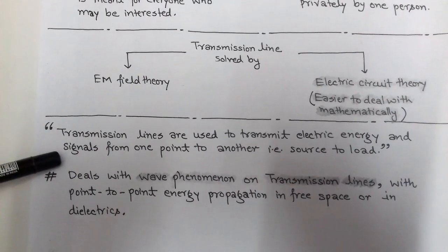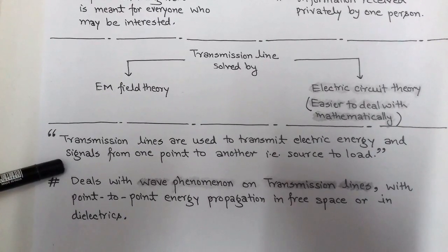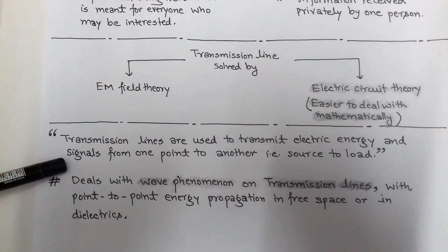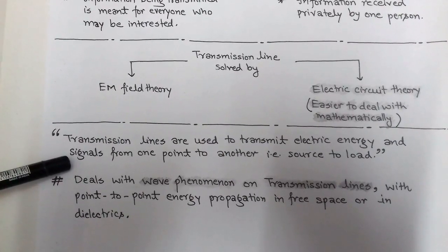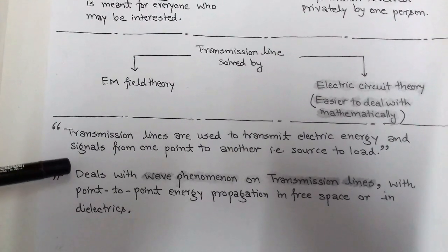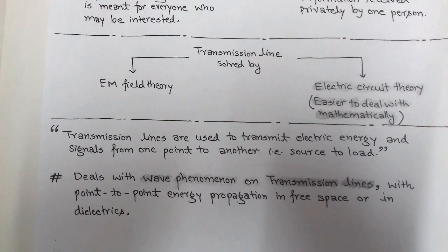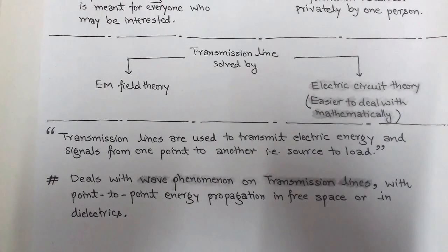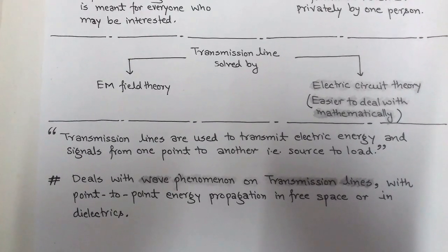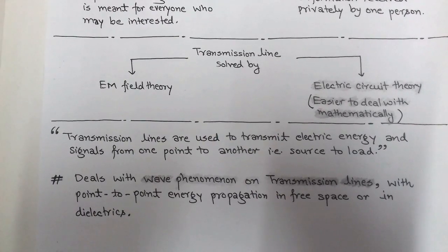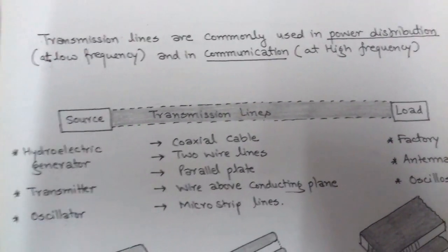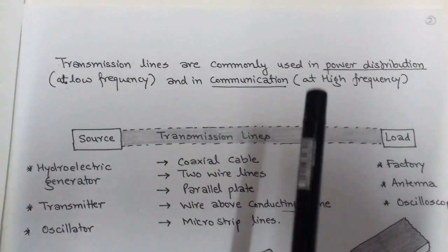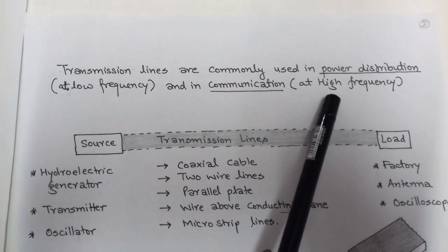Transmission lines are used to transmit electric energy and signals — that is, voltage or current — from one point to another, from source to load. We deal with wave phenomena on transmission lines, studying how electromagnetic waves behave as they propagate along a transmission line. Transmission lines are commonly used in power distribution at low frequency and in communication at high frequency.